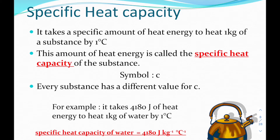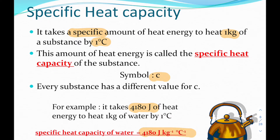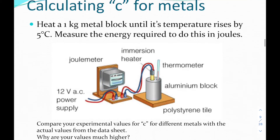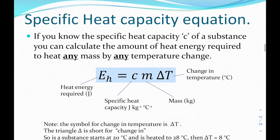Last time we were looking at specific heat capacity, where every substance requires a specific amount of heat energy to heat one kilogram of that substance by one degree C. The symbol for specific heat capacity is C. For example, for water, 4,180 joules is required to heat one kilogram by one degree. We also did an experiment to calculate the specific heat capacity for various metals and for water.